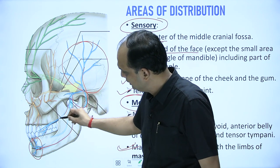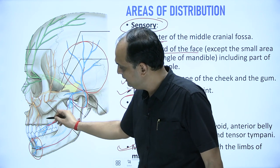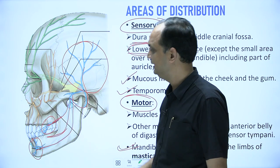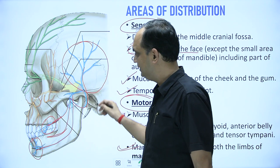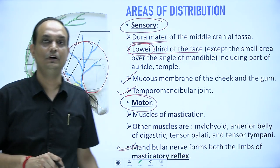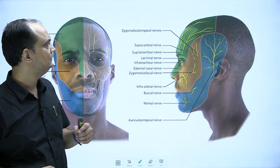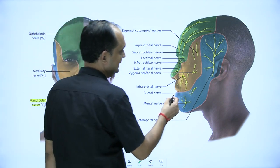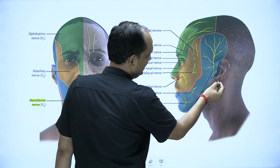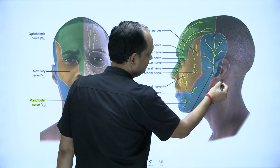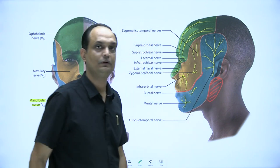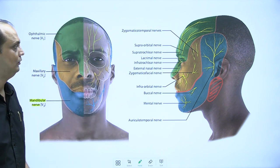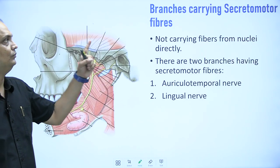An important point is that the mandibular nerve forms both the ascending and descending limbs of the mastication reflex. In this diagram, the blue color lines show the mandibular nerve branches: the auriculotemporal nerve supplying the sensory area, the inferior alveolar nerve supplying the lower teeth, the mental nerve supplying the chin region, the buccal nerve supplying mucosa, and the lingual nerve supplying the tongue.